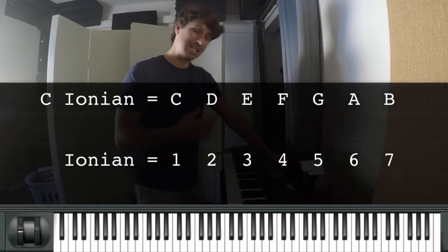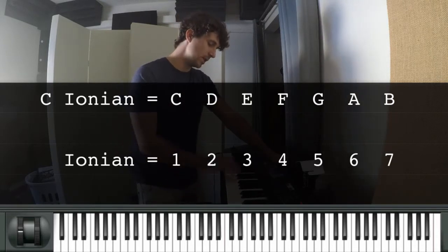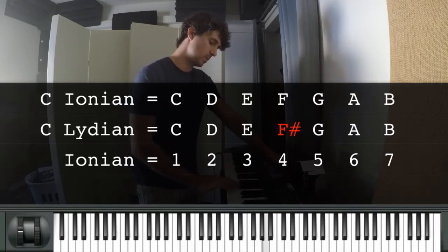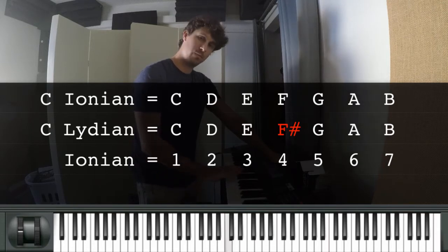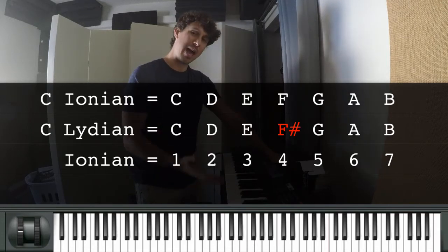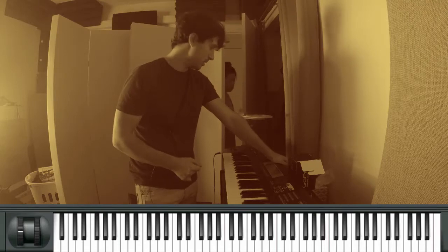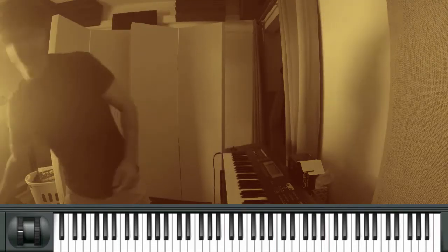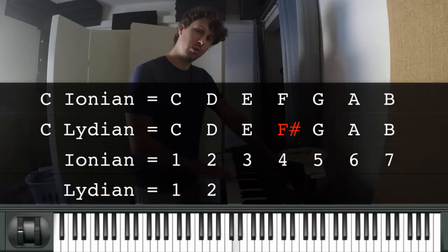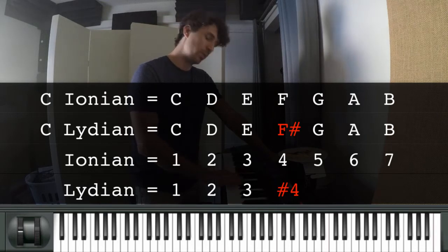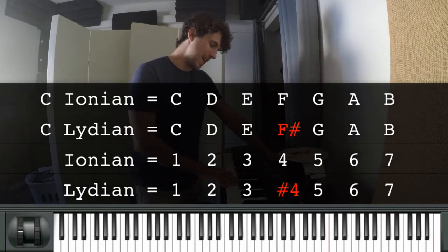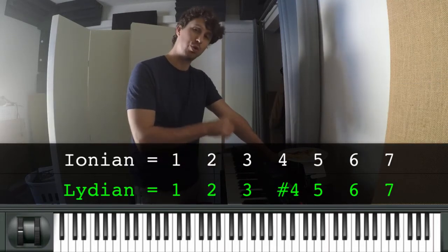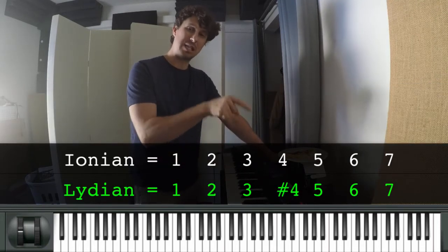The fourth mode is Lydian — this is C Lydian. Comparing against Ionian: we have one, two, three, a sharp four, and then five, six, and seven. The only difference is that Lydian has a sharp four. So Lydian is: one, two, three, sharp four, five, six, seven.